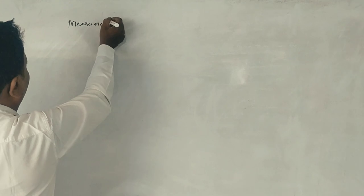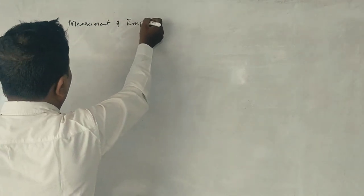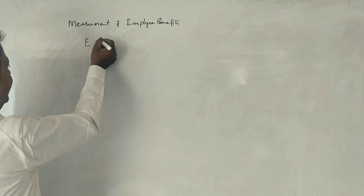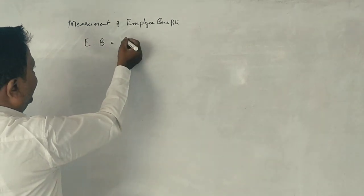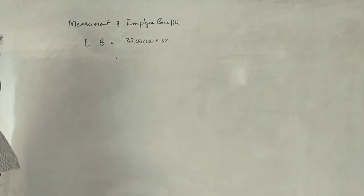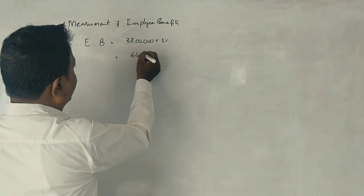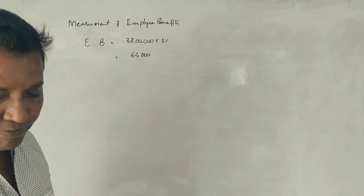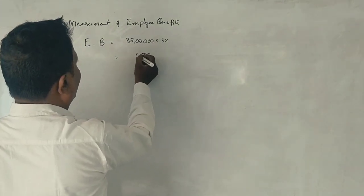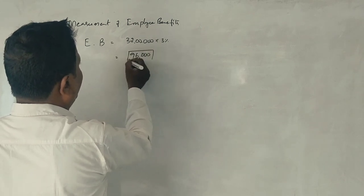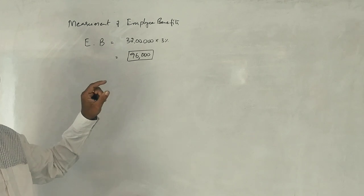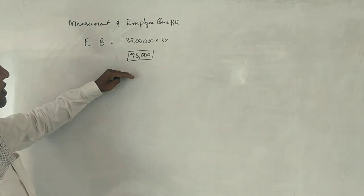Measurement of Employee Benefits. The employee benefit — bonus profit share — is 3%. The profit is 32 lakhs. So, employee benefit cost is equal to 3% of 32 lakhs, which is 96,000 rupees. This is the measurement of the employee benefit in the form of a bonus. This is the measurement model.